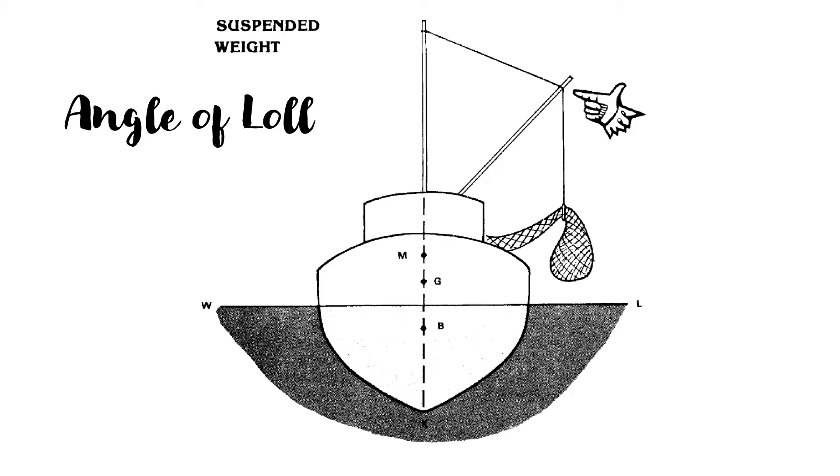Angle of loll is quite different from list. This is caused by different circumstances and requires much different counter measures to correct it. It is therefore most important that the seafarer or mariner should be able to distinguish between angle of loll as well as list.